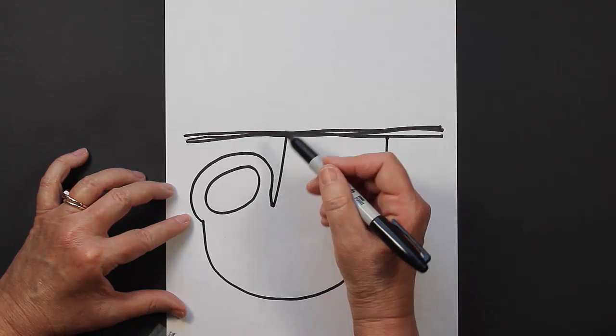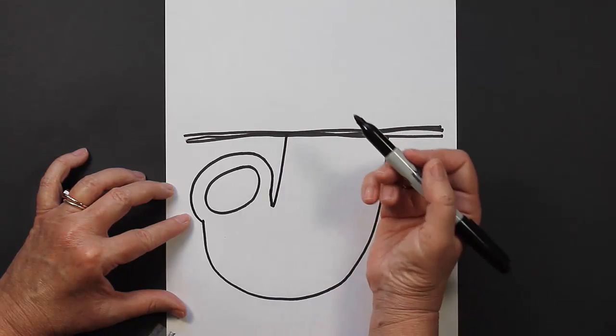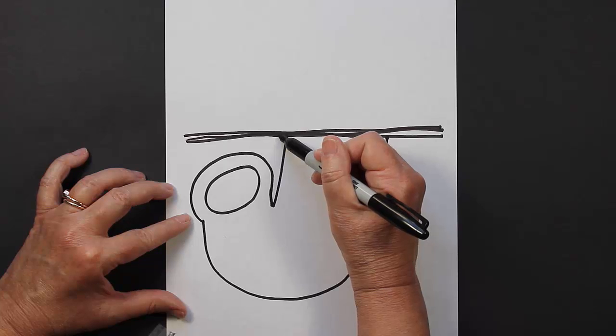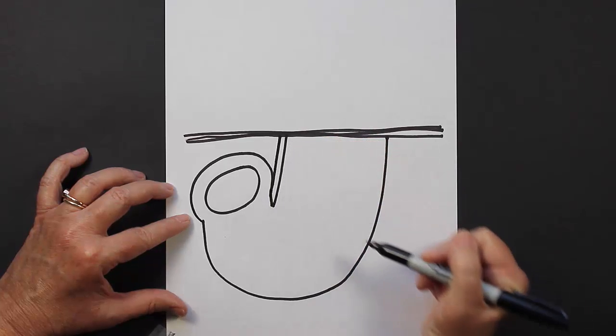Now we're going to make the arm that's on the other side. So it's just basically another straight line coming down until you hit the body.